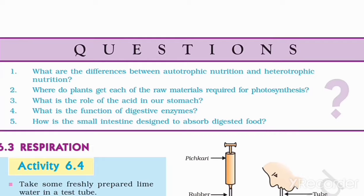What are the differences between autotrophic and heterotrophic nutrition? Autotrophic means it does not depend on others — they prepare their own food. Heterotrophic depends on other organisms.